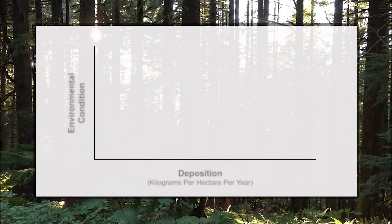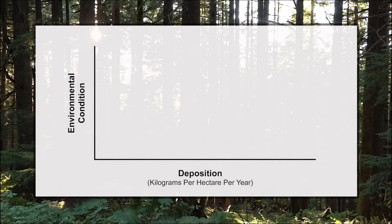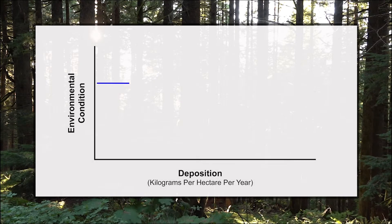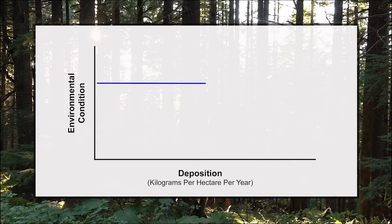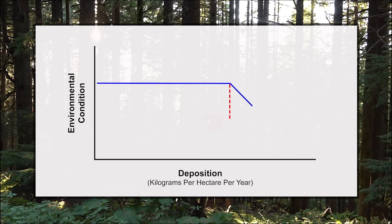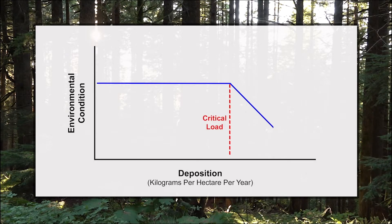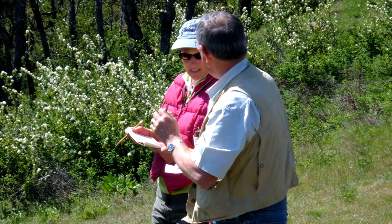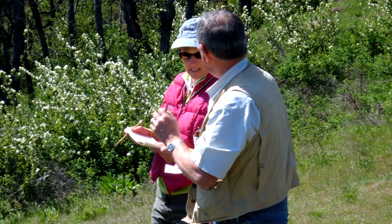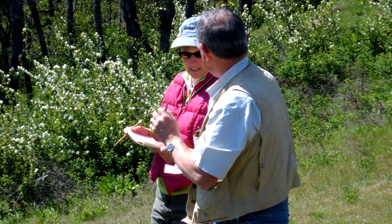One concept they use to do this is critical loads. As you recall from the other videos, a critical load is the level of deposition at which an ecosystem begins to experience harm. Let's take a closer look at how land managers are currently using critical loads.